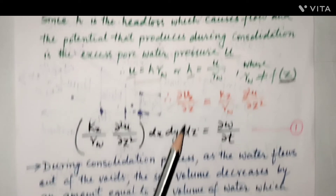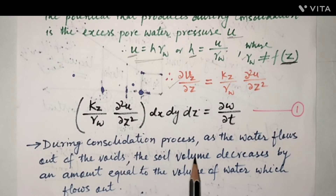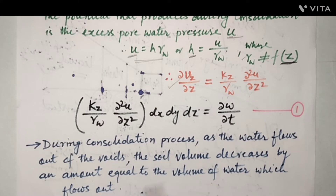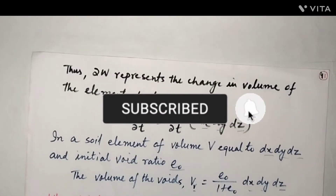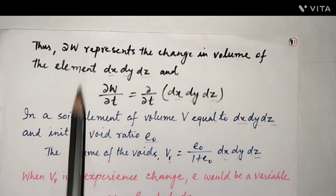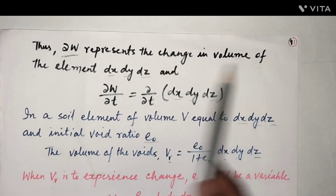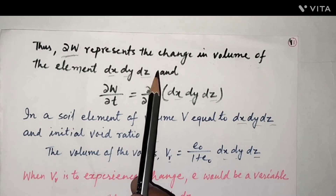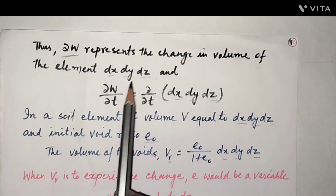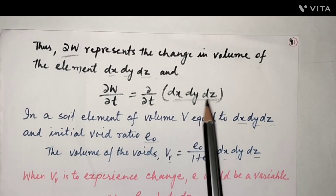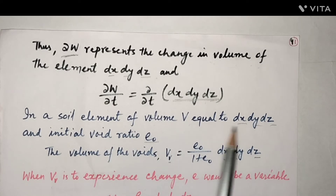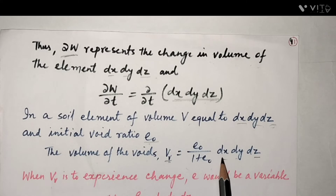During the consolidation process, water flows out of the voids, so the soil volume decreases by an amount equal to the volume of water that flows out. Thus, dW represents the change in volume of the element dx·dy·dz, and ∂W/∂t = ∂/∂t(dx·dy·dz). For a soil element of volume V = dx·dy·dz with initial void ratio e₀, the volume of voids VV = (e₀/(1+e₀)) · dx·dy·dz.